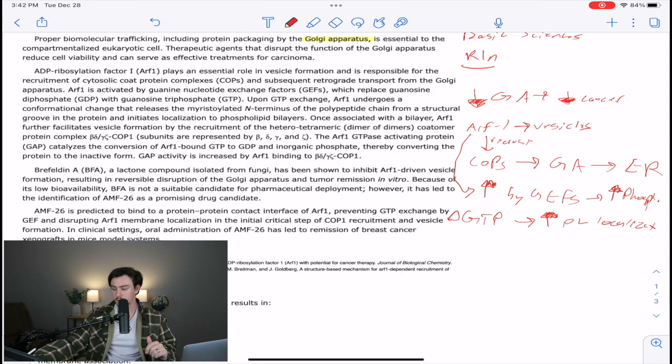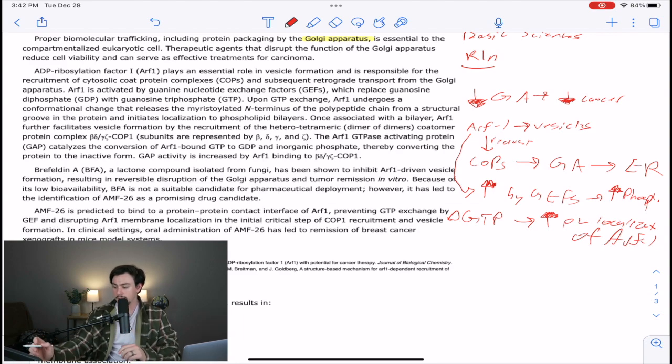Once associated with the bilayer, ARF1, and this is increased phospholipid localization of ARF1, it says once associated with the bilayer, ARF1 further facilitates physical formation by the recruitment of heterotetrameric dimers of dimers. So that's a basic science. Codomer protein complex COP1 subunits are beta, delta, gamma, and I'm really not sure what this Greek figure is. Maybe epsilon. So we recruit those. You can write that if you want.